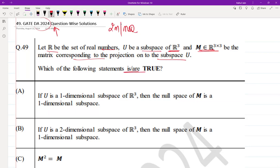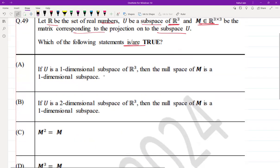Option A is: if U is a one-dimensional subspace of R³, then the null space of M is a one-dimensional subspace. So if U is one-dimensional, M will project onto a line of R³, correct? If U is one-dimensional, M will project onto a line of R³.